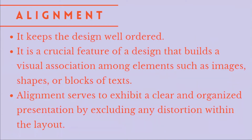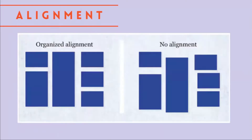Next is alignment. Each feature of the design should be aligned at the top, bottom, center, or sides to form a visual association among the elements. Alignment depicts the scale of each element by analyzing their proportion and concentrating on the elements that can have a powerful influence on observers. Organized alignment shows that elements are neat and well-ordered, while in no alignment, the elements are cluttered and all over the place.